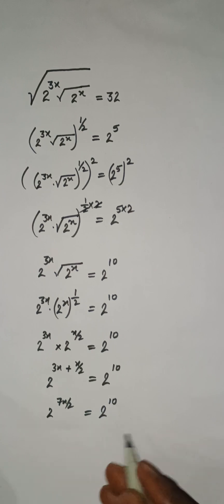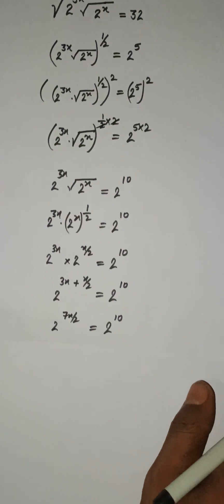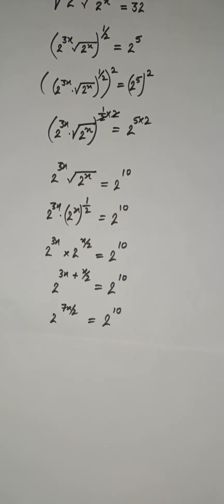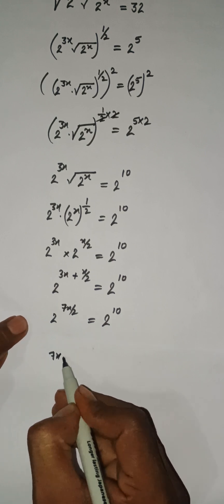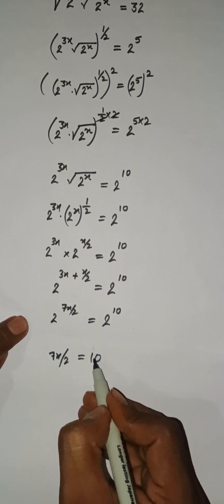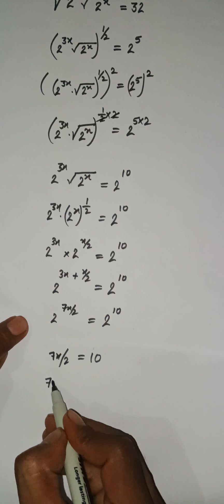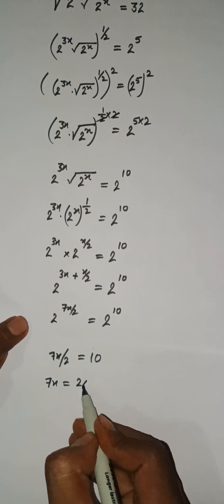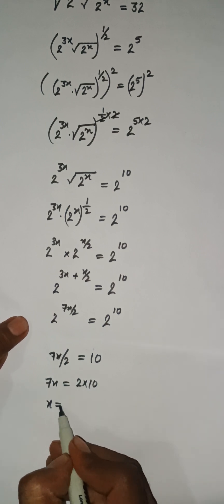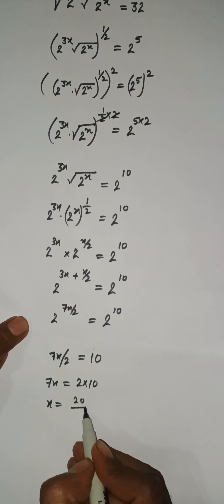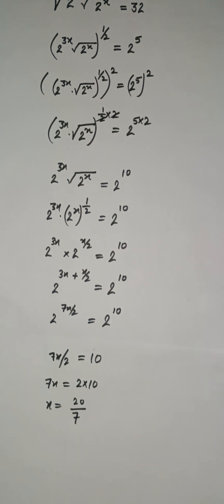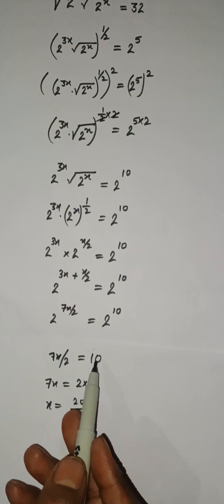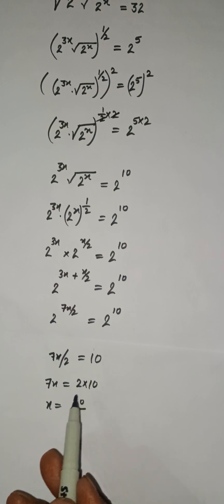Now we have 3x plus x by 2, which is 7x by 2. So here 7x by 2 equals 2 to the power 10. Because the bases are the same, we can equate their exponents: 7x by 2 equal to 10. So 7x equals 2 into 10, giving x equal to 20 by 7. This is the solution of this problem.